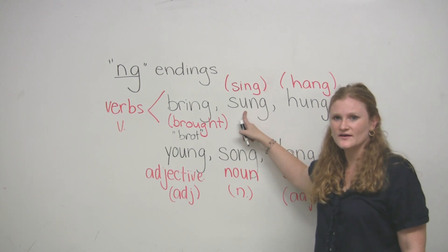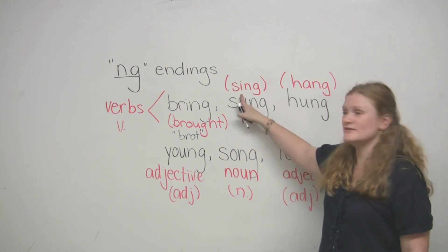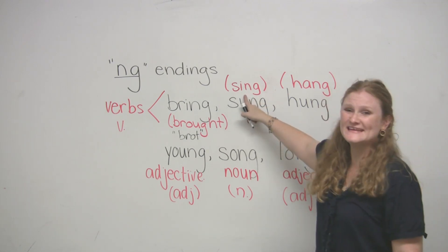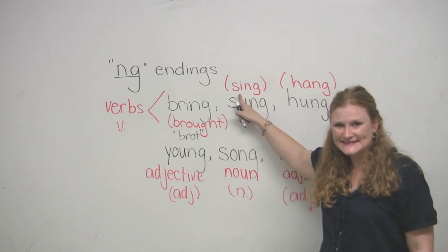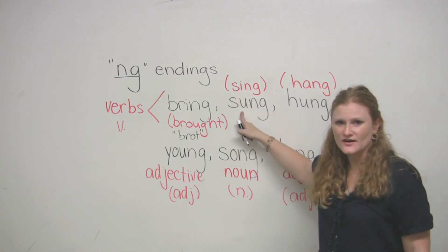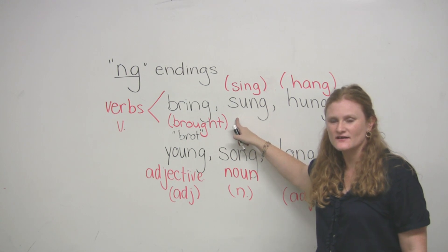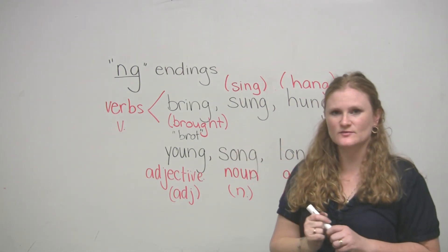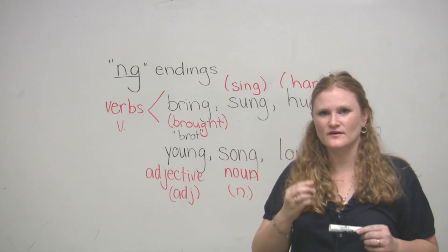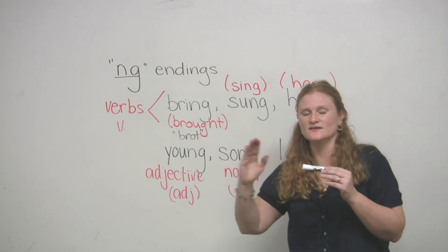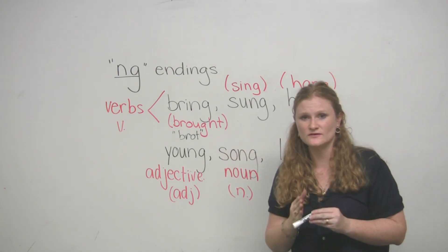The past tense is sung. The present tense of the verb sung is sing. So you can say, sing, sung. Try that. Sing, sung. When we pronounce the end of this word, we close off our vocal chords right away so that we don't actually say the G at the end. It's a very short sound.